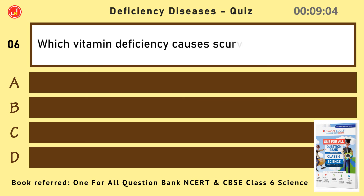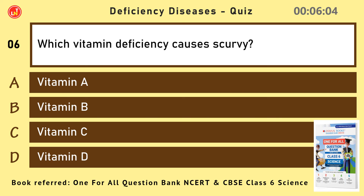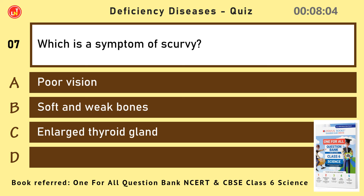Which vitamin deficiency causes scurvy? Vitamin C. Which is a symptom of scurvy? Bleeding gums.